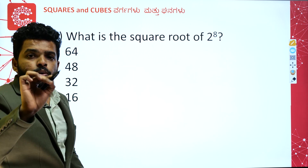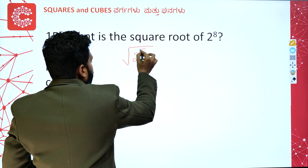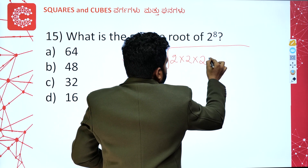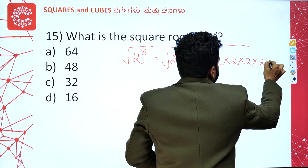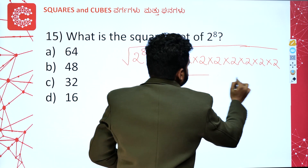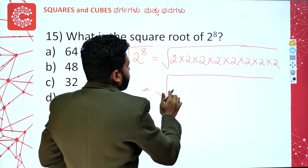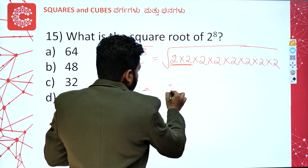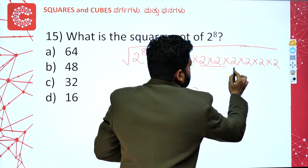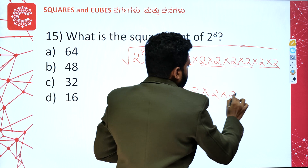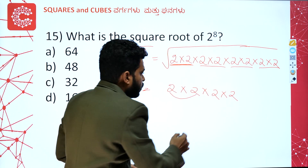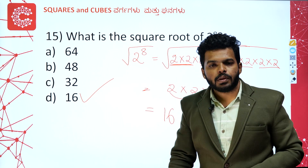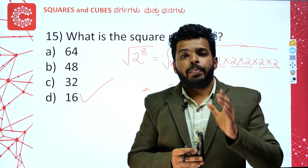Square root of 2 to the power 8 — write it as 2 into 2 into 2 into 2 into 2 into 2 into 2 into 2. So square root means pairs: 2 into 2, times 2 into 2, times 2 into 2, times 2 into 2. Multiply out: answer is 16. Clear.